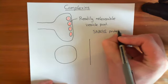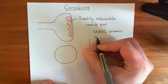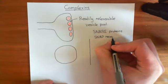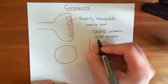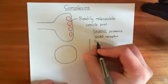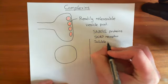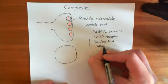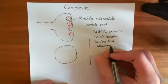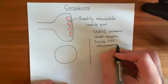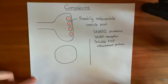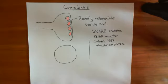SNARE stands for SNAP receptor. SNAP is a protein involved in the recycling of SNARE proteins, and it stands for soluble NSF attachment protein. NSF stands for N-ethylmaleimide sensitive factor. We won't go into that at the moment — there will be more videos on alpha-SNAP and NSF and their involvement in recycling SNARE proteins later on.